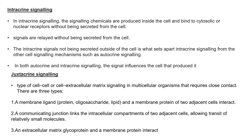The final type is juxtacrine signaling. This is a type of cell-to-cell or cell-to-extracellular matrix signaling in multicellular organisms which requires close contact. There are three types: a membrane ligand such as a protein, oligosaccharide, or lipid interacts with a membrane protein of two adjacent cells; a communicating junction links the intercellular components of two adjacent cells, permitting transit of relatively small molecules; and an extracellular matrix glycoprotein interacts with a membrane protein.